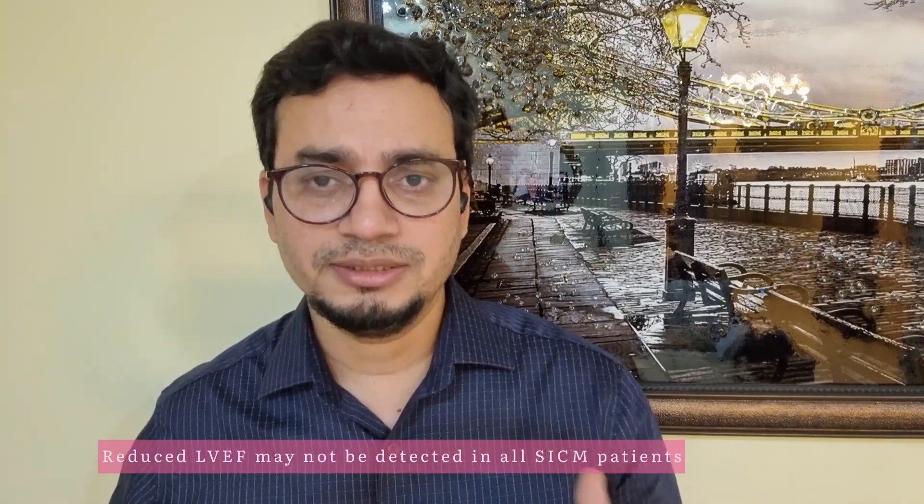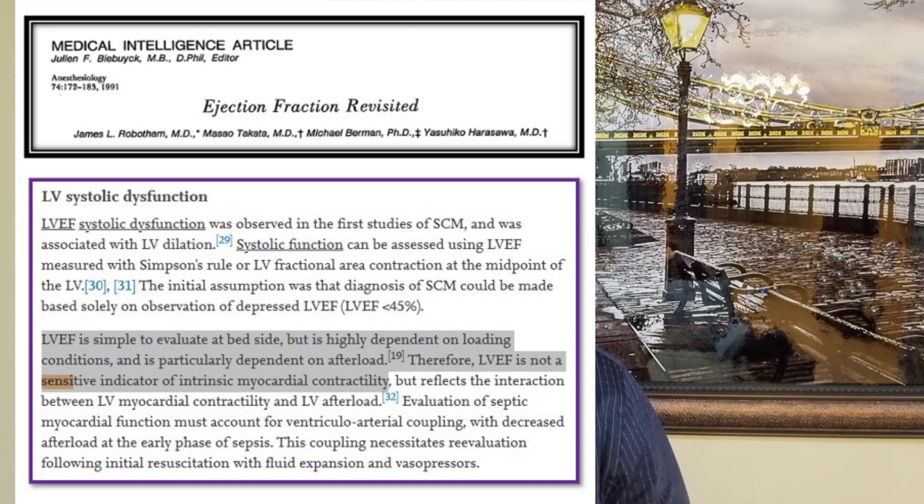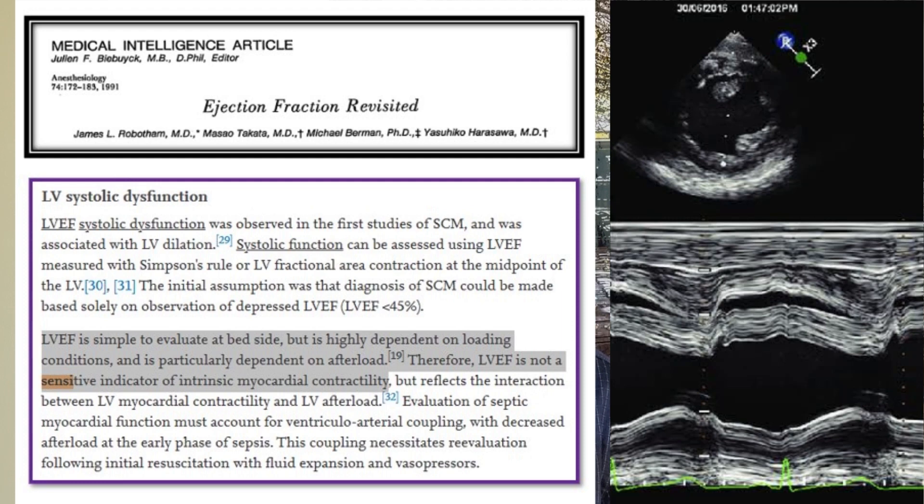Bedside transthoracic echocardiography is the gold standard for the diagnosis of SICM. Every hemodynamically unstable patient should undergo bedside transthoracic echocardiography. LV ejection fraction, which is a very common echocardiographic parameter, is not a sensitive indicator of intrinsic myocardial contractility — it reflects the interaction between LV myocardial contractility and LV afterload. In the initial stages of sepsis, when vasopressor therapy has not been started, due to extreme vasodilation and reduced afterload, LV ejection fraction might appear to be normal.